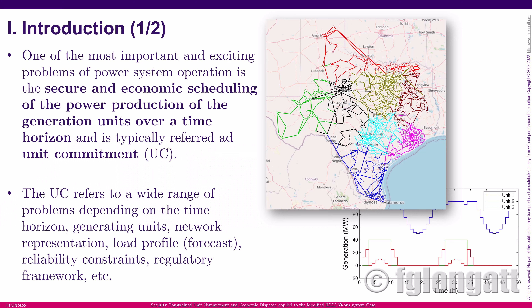One of the very important and exciting problems in power system operation is the secure and economic scheduling of the power production of generation units inside the electrical power system. This activity is performed over a time horizon that can range from several hours to a year, and is typically named as unit commitment. The unit commitment is a very interesting mathematical and physical problem that depends on the time horizon.